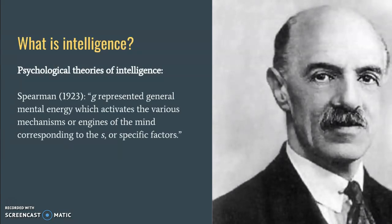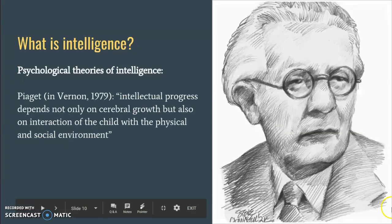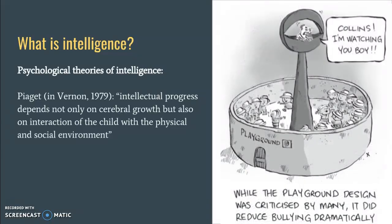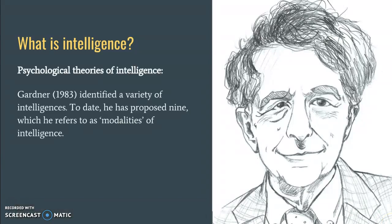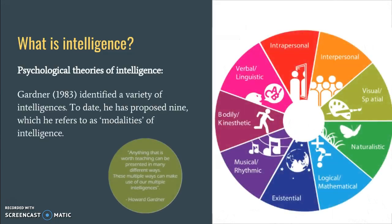In terms of psychology, Spearman believes that mental abilities are hierarchically arranged with the g-factor at the apex and specific mental abilities below it. The g-factor is significantly influenced by our genes. According to Piaget, intellectual progress depends not only on cerebral growth, but also on the interaction of the child with the physical and social environment — the physical and social environments matter a lot, as we will see. And of course, Gardner has identified multiple intelligences; to date he has proposed nine, which he refers to as modalities of intelligence.